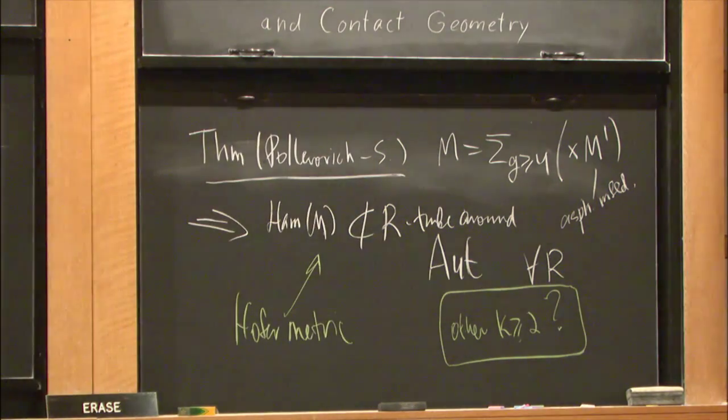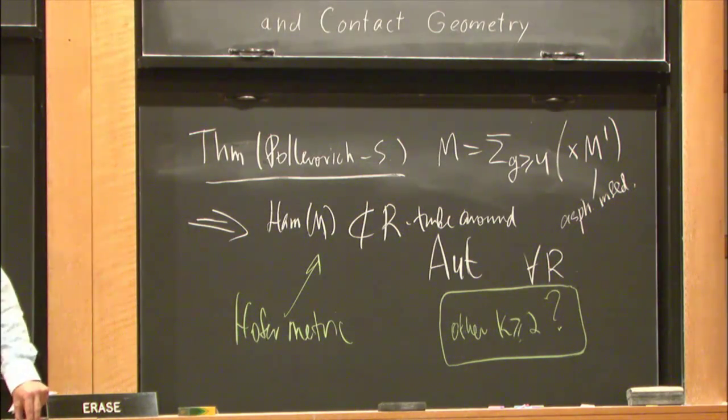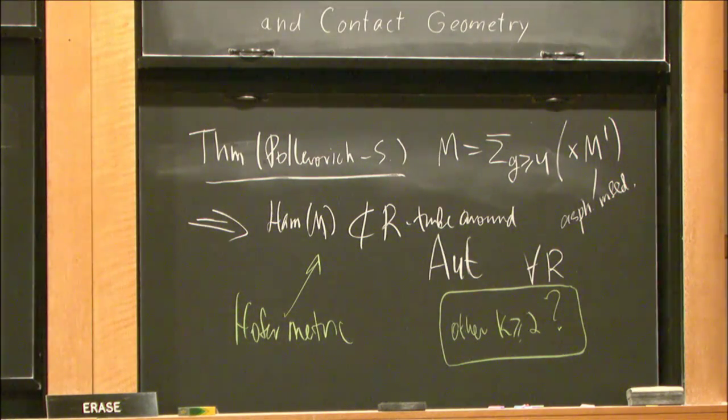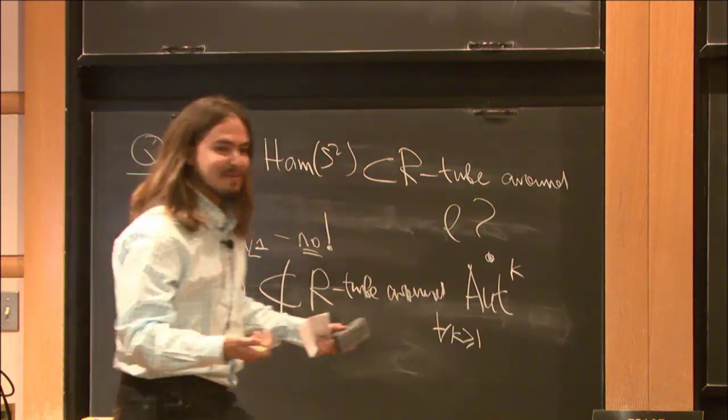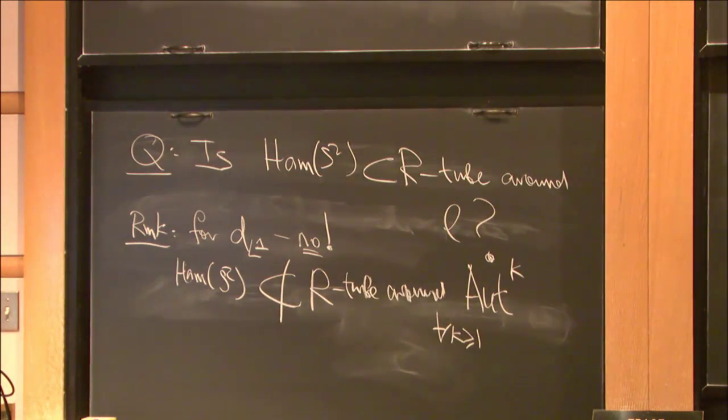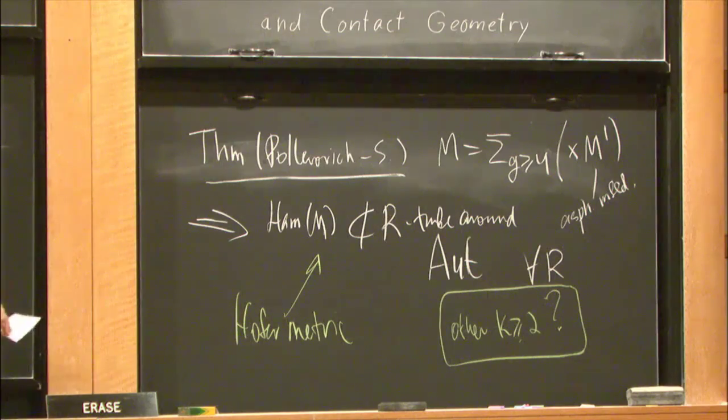From this result, it follows that the word metric with respect to autonomous on S2 is unbounded. So this is a result. With contact diffeomorphism groups, how much time do I have left?